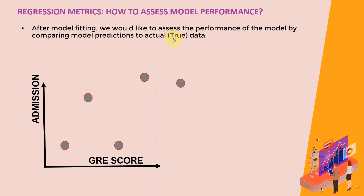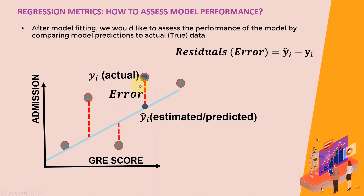After the model is trained, I want to see how good that machine learning model is. Here we have our GRE score and the chances of admission on the y-axis, along with our data points. All I'm trying to do is come up with a simple straight line — that straight line is my model, with slope M and y-intercept B. The question is, how good is that model? We calculate what we call the residuals, which is the vertical distance between what the model predicted and what the actual true points are.